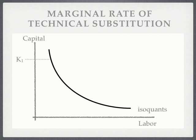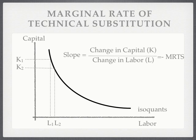To determine that, we look at the level of capital and labor at two different points. The slope is equal to the change in capital divided by the change in labor, which is equal to the negative marginal rate of technical substitution. It shows us how, as we change capital and labor, the blend or mix impacts production.